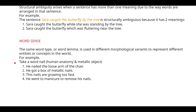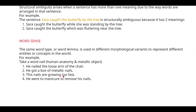Consider the sentence: 'He nailed the loose arm of the chair.' Here, nail is used as a metallic object. The second sentence, 'He got a box of metallic nails,' clearly states it is a metallic object. The third sentence, 'These nails are growing too fast' — if you consider metallic nails, they don't grow, so this must refer to nails under human anatomy.